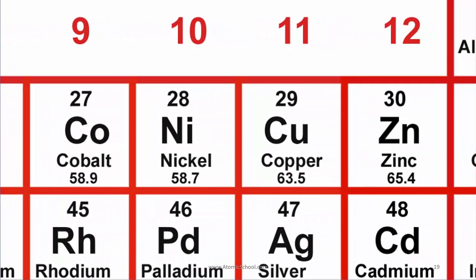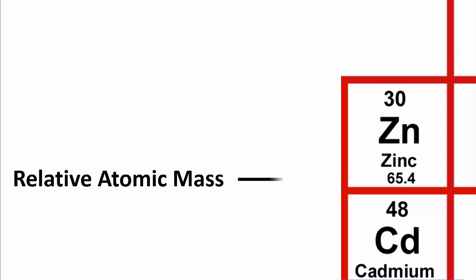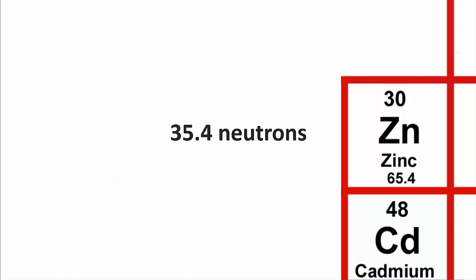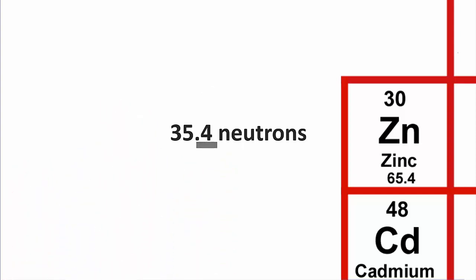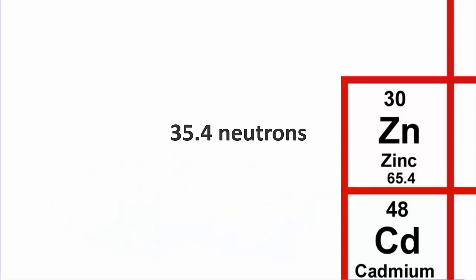Now do the calculation for zinc. Do you get a strange answer? Zinc has a relative atomic mass of 65.4 and an atomic number of 30. It must have 65.4 minus 30 equals 35.4 neutrons. That doesn't make sense. How can there be 0.4 of a neutron? To make matters worse, most relative atomic masses are fractions like this. The next video gives us a surprising answer to solve this puzzle.